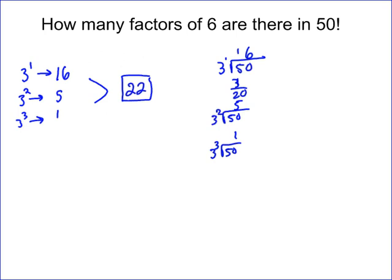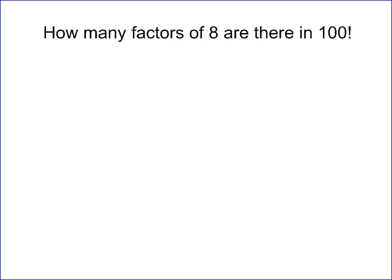The second problem is similar, but this time we're looking at factors of 8 in 100 factorial. Since 8 is not prime — it equals 2 to the third — we need to find how many triplets, or groups of three 2's, exist. So we first find the total number of 2's in 100 factorial.